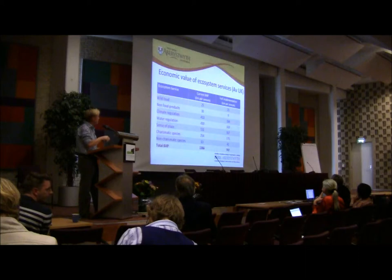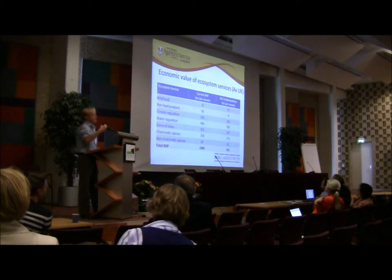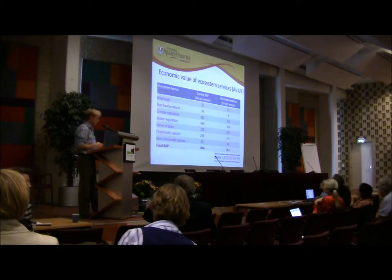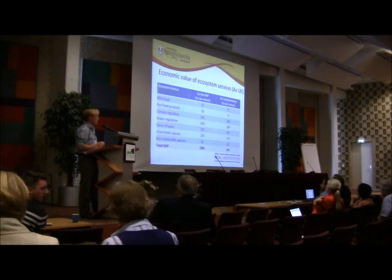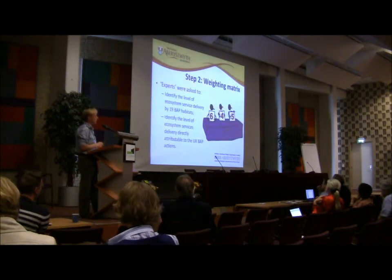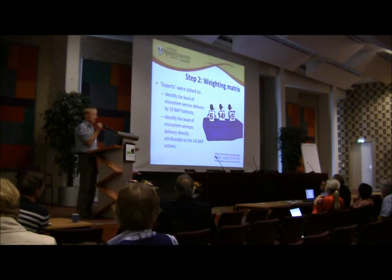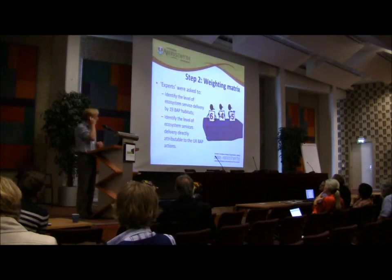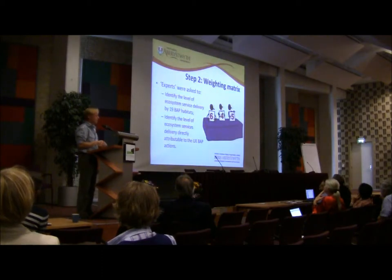These values are in addition to that base value, so if you extend the policy you will get more services. That was the first element — results from the choice experiment based on the services. Then what we tried to do is identify how the 19 broad habitats delivered those services, and how the biodiversity policy was directly contributing to service delivery.